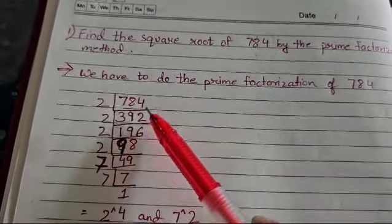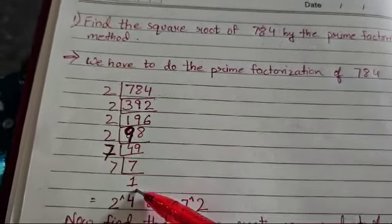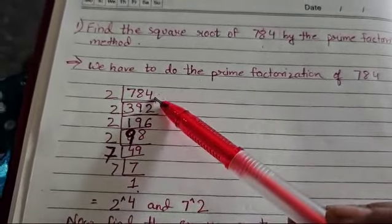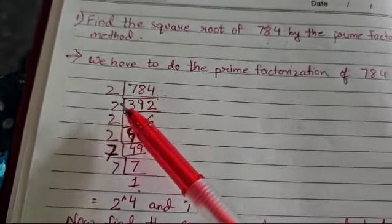In a prime factorization method, you will write 784 and you will have to factorize them. So when we factorize them, you start with an even number that is 2. When you divide 784 by 2 like this, you get 392.